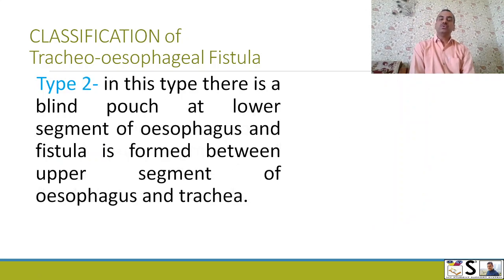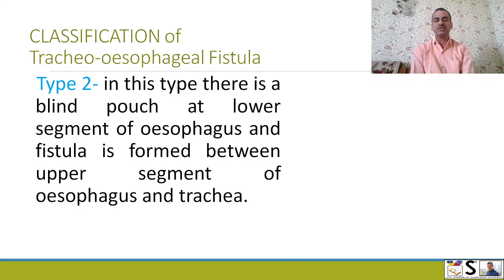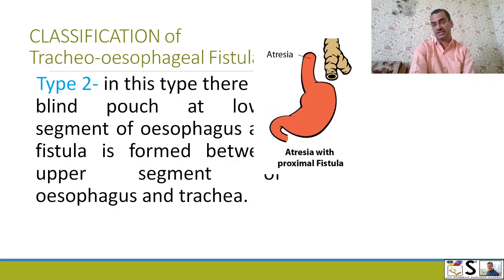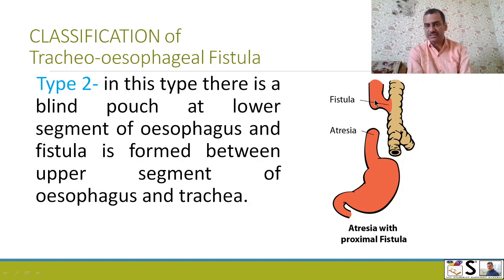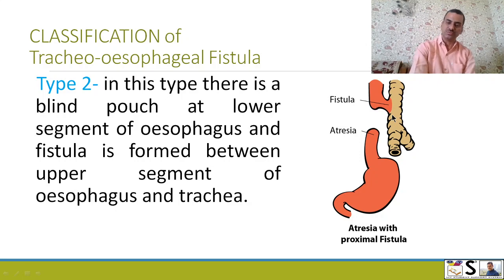Next is Type 2. In this type, there is a blind pouch at the lower segment of the esophagus, and a fistula is formed between the upper segment of the esophagus and the trachea. You can see the lower blind pouch and the upper esophagus connects with the trachea. This is Type 2 TEO fistula.